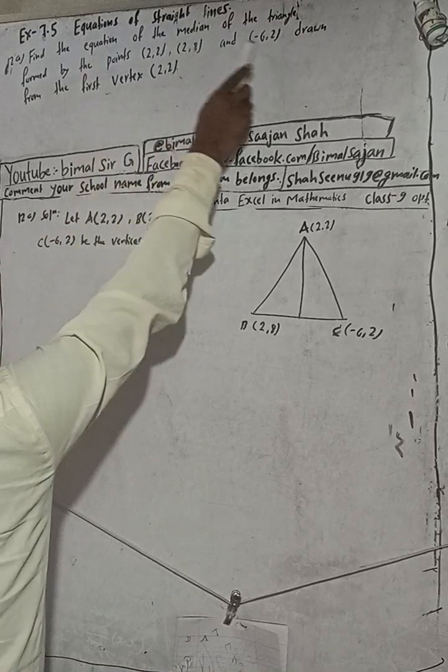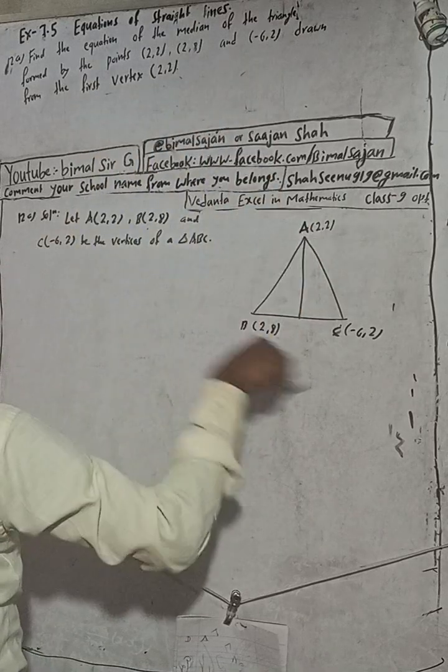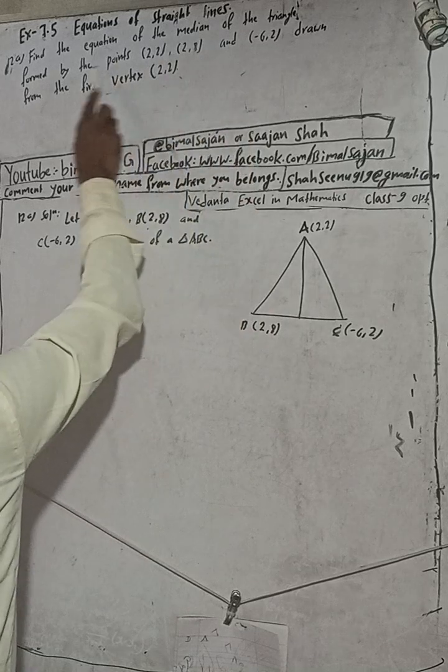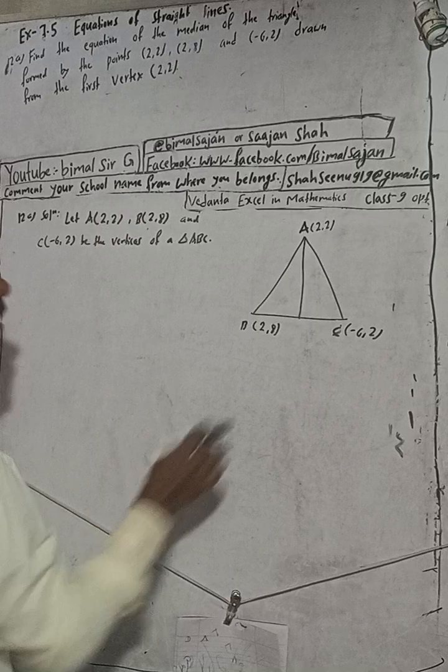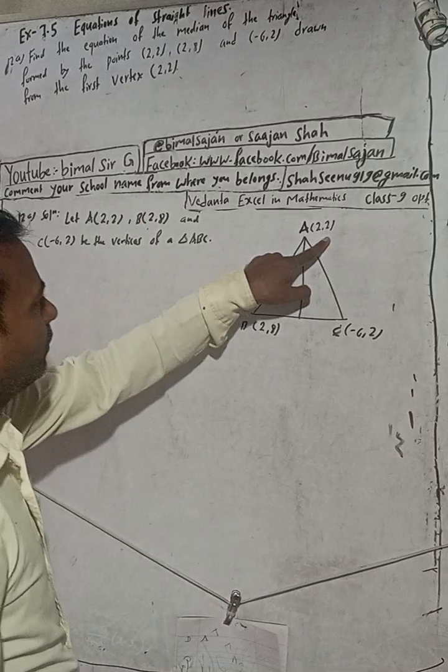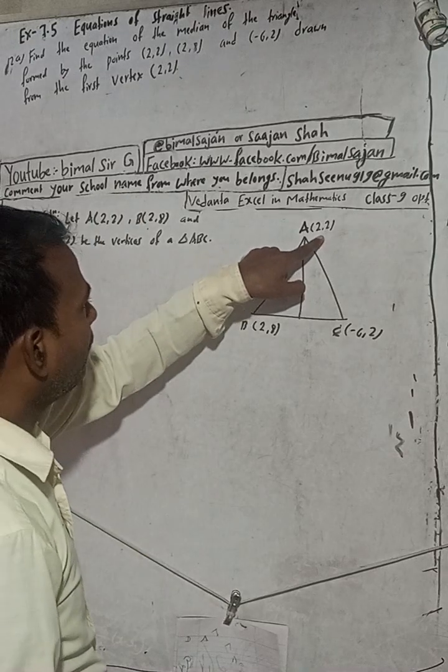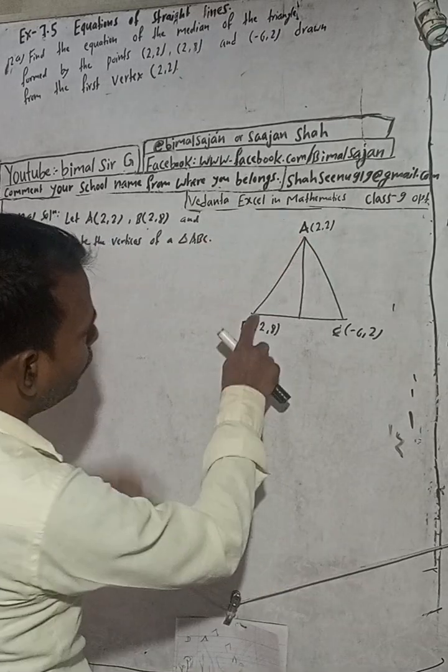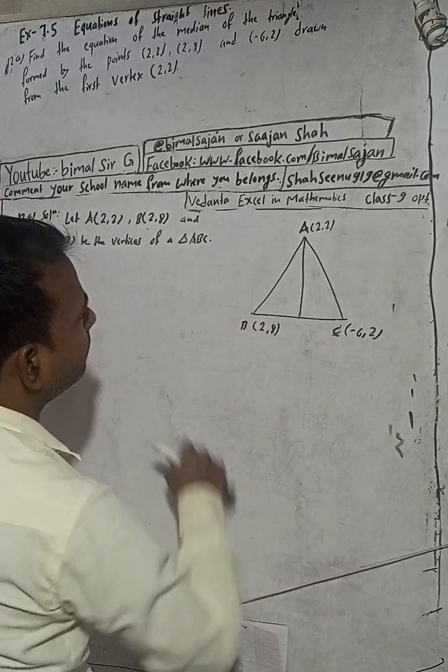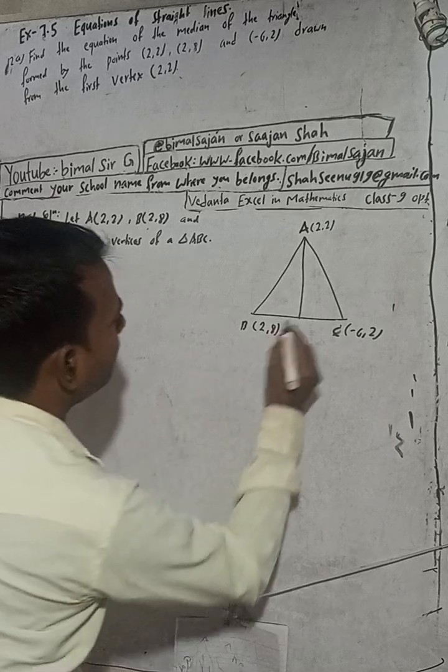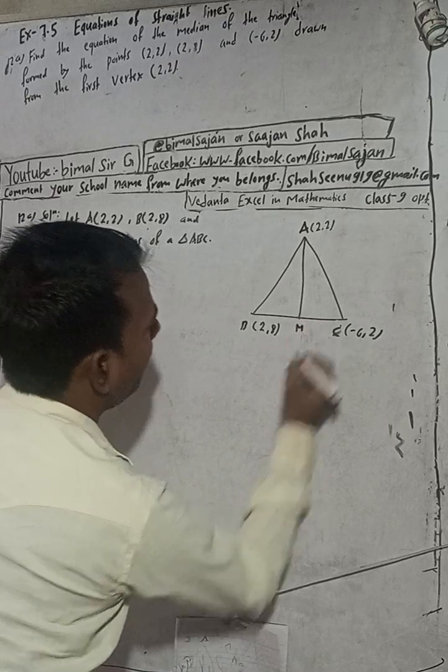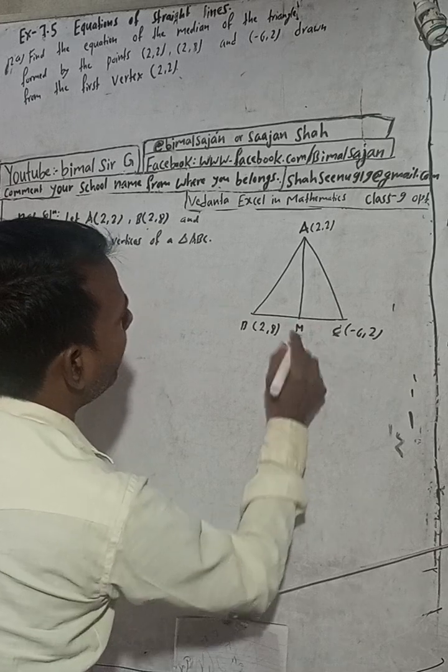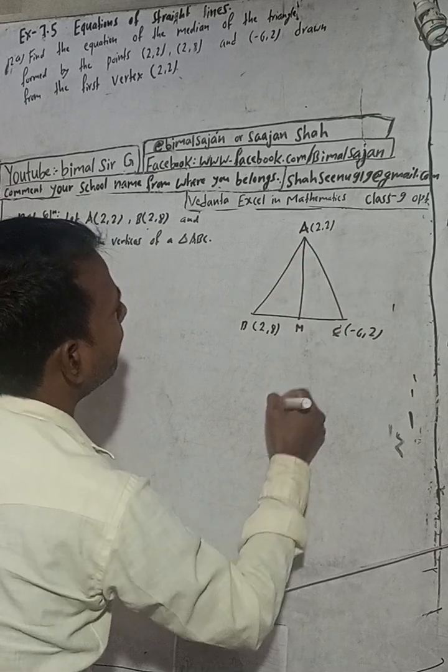Find the equation of the median of the triangle formed by the points, drawn from the first vertex. Suppose this is our first vertex. Then from this first vertex, median means what? From this point to the midpoint of this. This is the midpoint. Suppose this is our M. M is the midpoint of B and C. Then this midpoint and this point is called median.